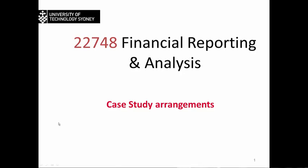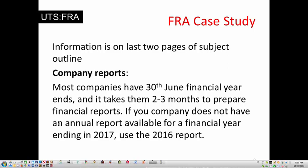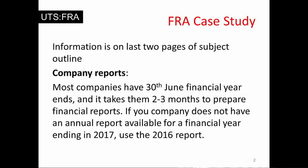A few key points about how you approach this. Firstly, if you're not sure what you need to do, the information about the assignment is on the last page of the subject outline. Some students have asked which year financial reports they should use. Most companies in Australia have 30 June financial year ends, and given how long it takes to present financial reports, many companies will not have the 2017 financial reports — they might if they had different year ends, like March or even December 2016.